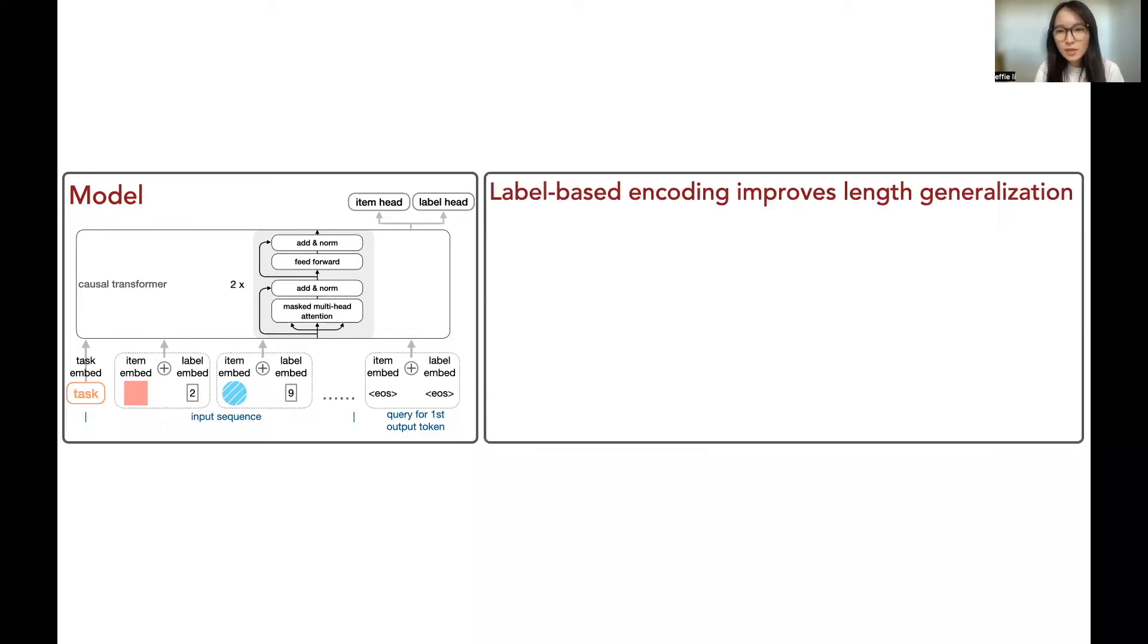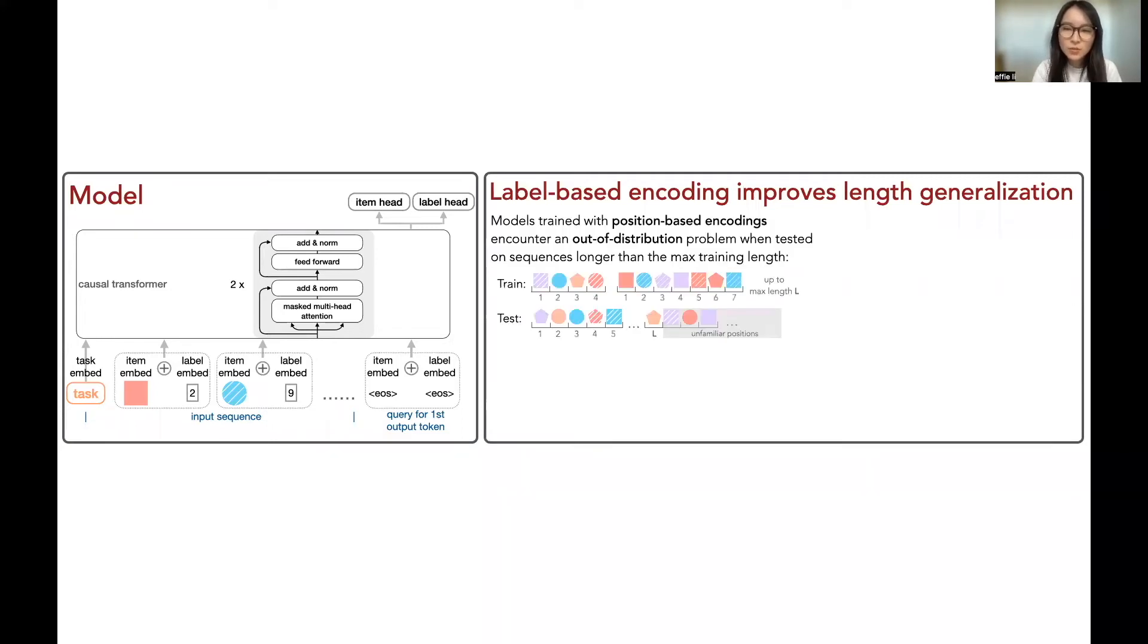Here, we introduce label-based order encoding. For the position-based encoding methods typically used in transformers, there is an out-of-distribution problem. Suppose the model is trained on sequences up to length L, any sequence at test time longer than L will involve position encodings unfamiliar to the model.